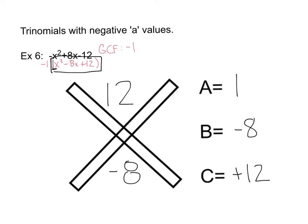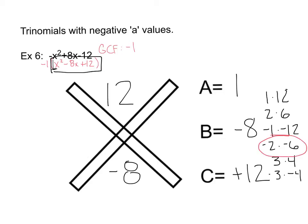Now filling in our x method using the new equation: a is 1, b is negative 8, c is positive 12. A times c gives positive 12 on top, negative 8 on the bottom. Factors of 12 include 1 times 12, 2 times 6, negative 1 times negative 12, negative 2 times negative 6, 3 times 4, and negative 3 times negative 4. Since we need factors that add to negative 8, negative 2 and negative 6 are our values.